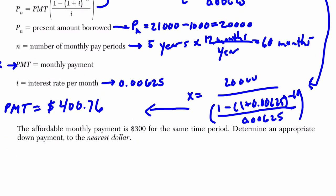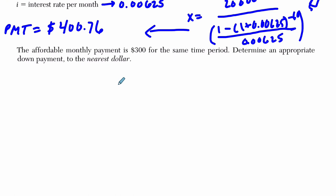But they're saying here in the second part they can't afford that. They can only afford $300 per month over the same time period, determine an appropriate down payment. So that means we're trying to solve for P sub N, because that will tell us what we borrowed, and then we can figure out the down payment from there.